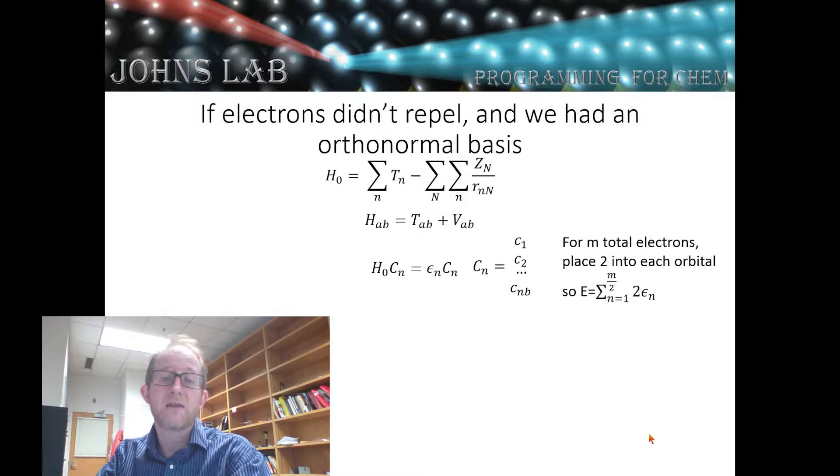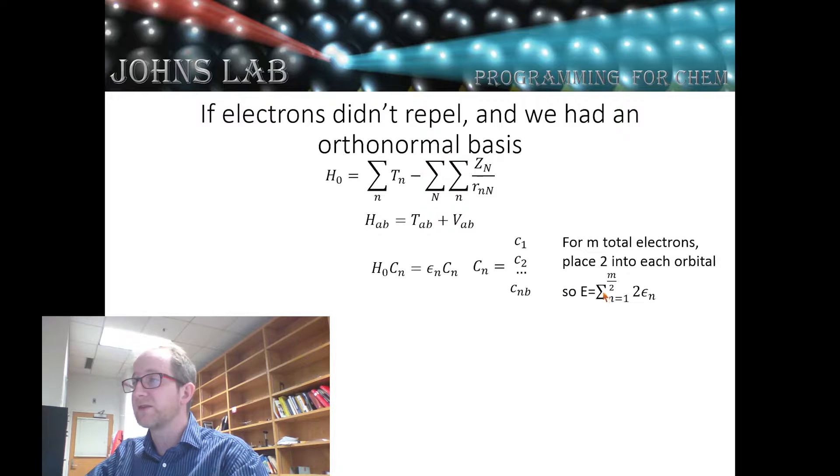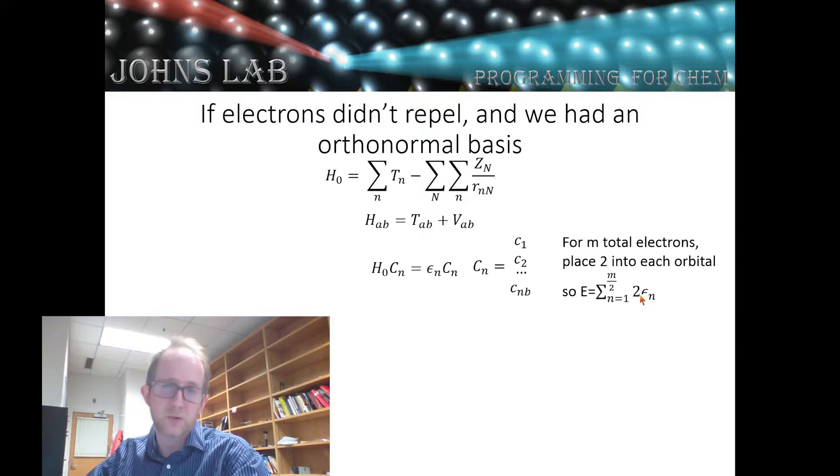And then if we wanted to find the energy levels for that, we would look for the eigenvectors and solve the eigenvalue problem, where our core Hamiltonian operating on a column vector in our orthonormal basis set resulted in an eigenvalue times that same column vector. This column vector is just a series of coefficients multiplied by our orthonormal basis functions. And so we would solve for all of the different eigenfunctions and all of the different eigenvalues. And then we would place two electrons in each eigenvalue, so two electrons per orbital.